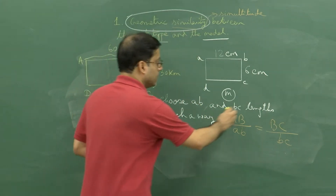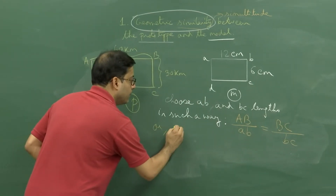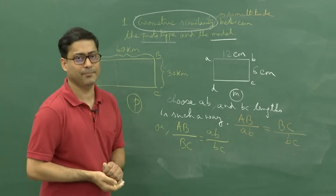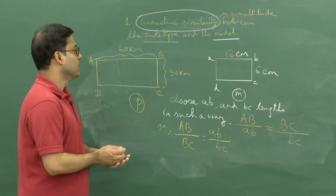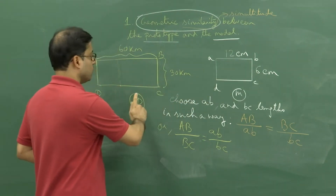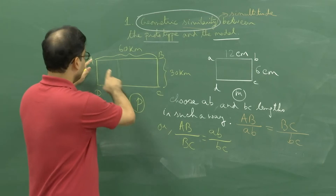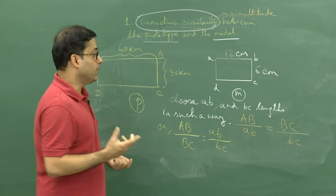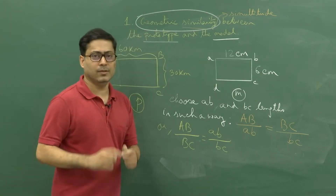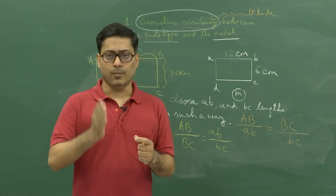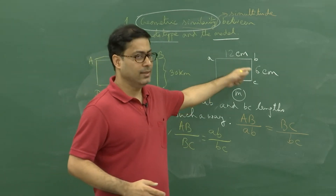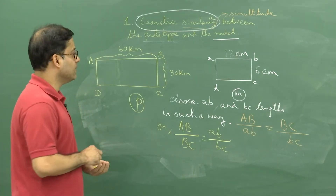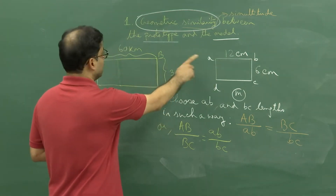One can write this equation in an equivalent form. We have no control on the prototype dimensions — nature has created them. But we have full control on the model dimensions — we can chop the clay with a knife and get a suitable length ratio. This was the two-dimensional case of geometric similarity. Similarly we can handle a three-dimensional case where not just length and width but also depth is involved — then instead of a rectangle, we think of a cuboid.